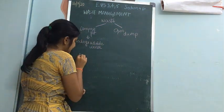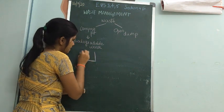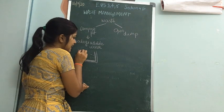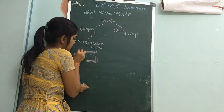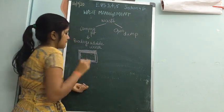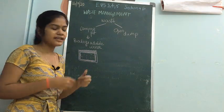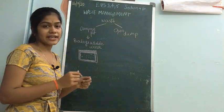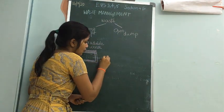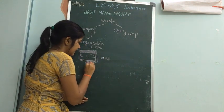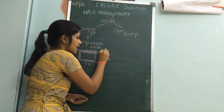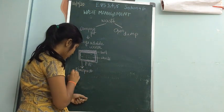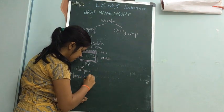A compost pit is used mainly for biodegradable waste. They make a pit-like structure on the ground, dump all the waste into it, and cover it with soil. After some time, due to microbial activity, the waste inside converts into compost. This compost can then be used as manure for crops and fields.